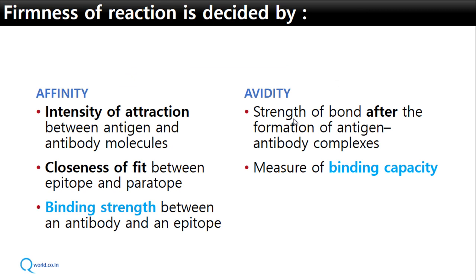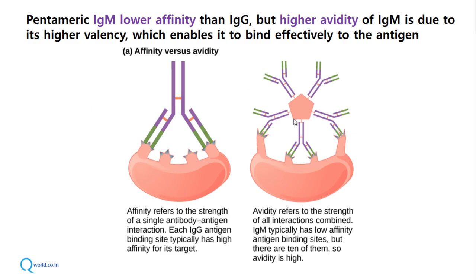Affinity is the intensity of attraction between antigen and antibody molecules; it depicts the closeness of fit between epitope and paratope — the binding strength between an antibody and a single epitope on an antigen. Avidity is the strength of bond after formation of antigen-antibody complexes and measures the overall binding capacity. For example, consider two antibody types: IgM and IgG.